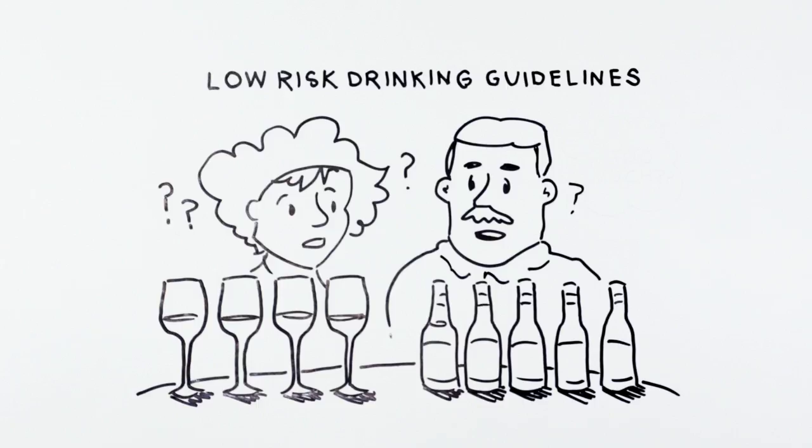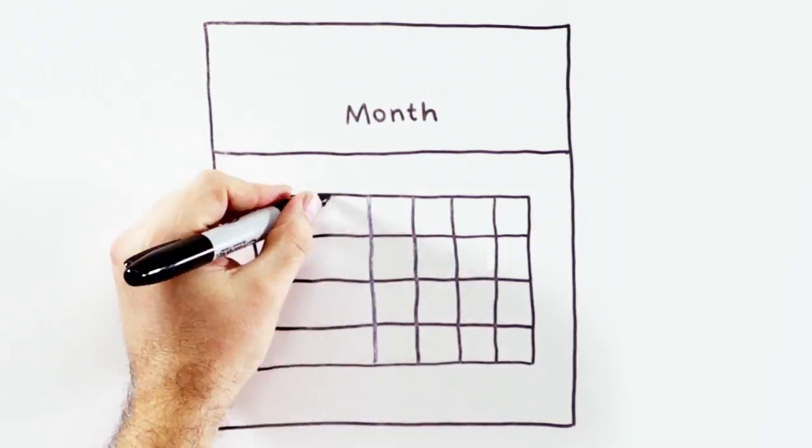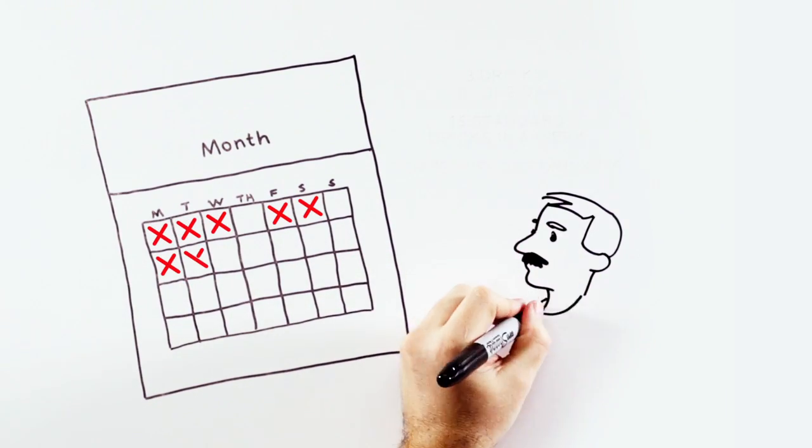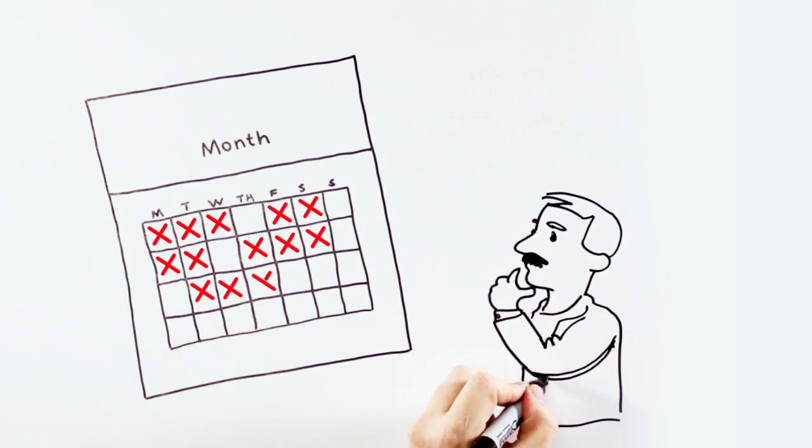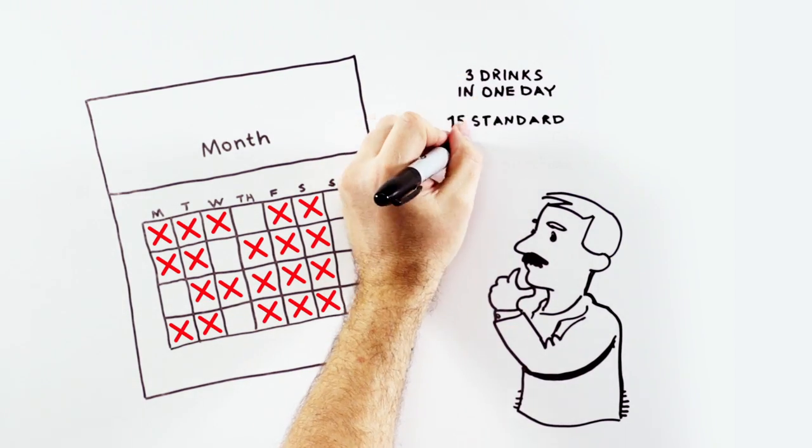If you are a healthy man, drink no more than three standard drinks in one day and no more than 15 standard drinks in a week. But remember, less is always best. Every week should have at least two days without drinking to avoid it becoming a habit.